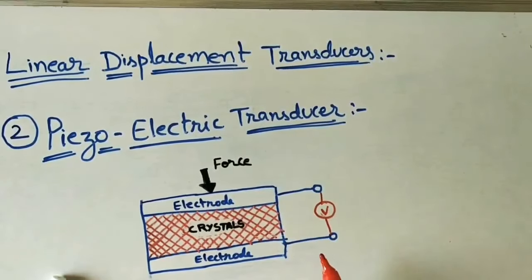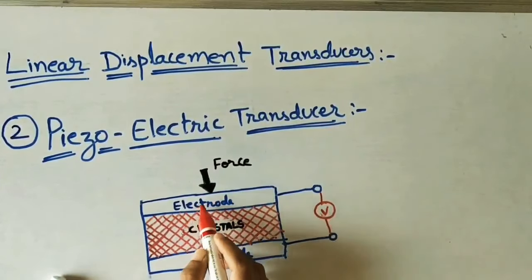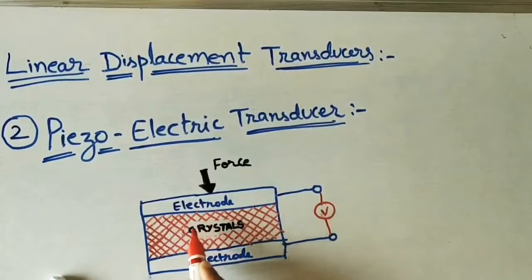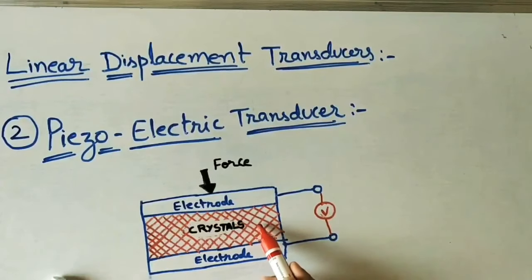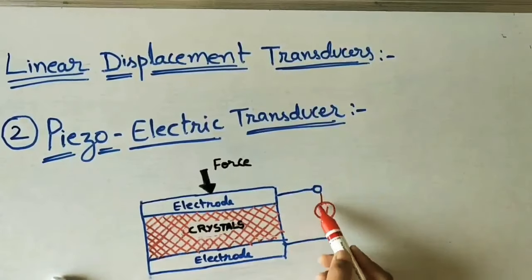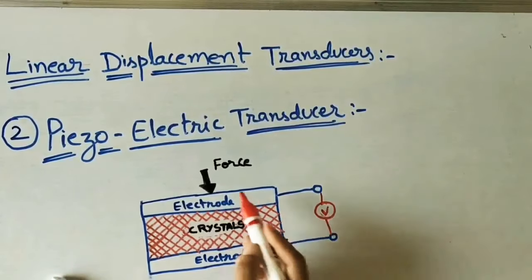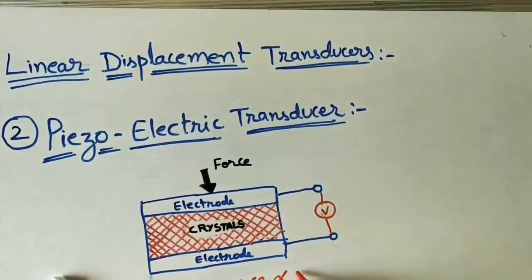When I apply some force on the electrode, it moves downward and the crystals compress. Because of this compression, electric charge develops. We can also call this electrical potential or voltage. This voltage can be found using a voltmeter. The applied force is proportional to the developed voltage at the output.